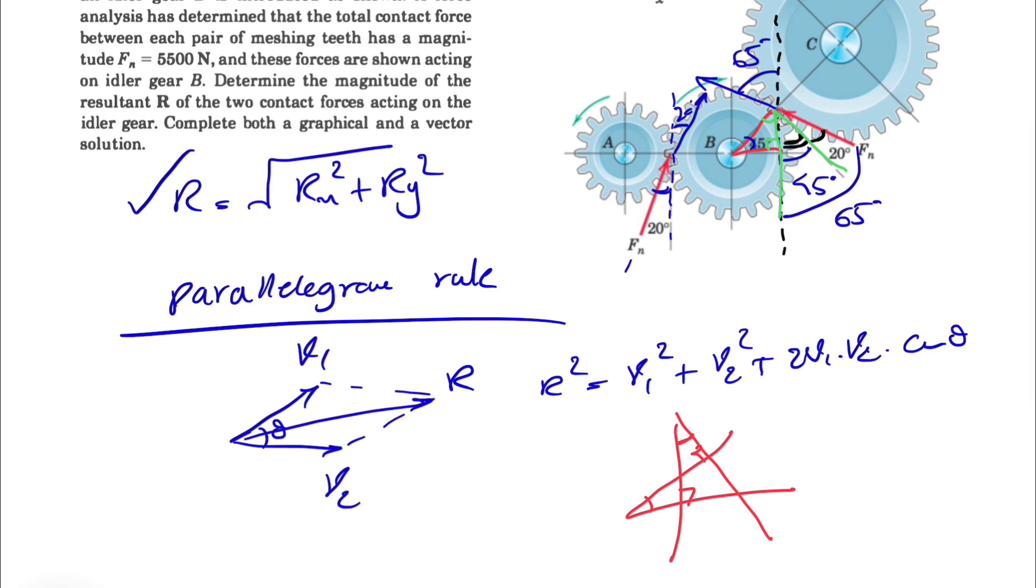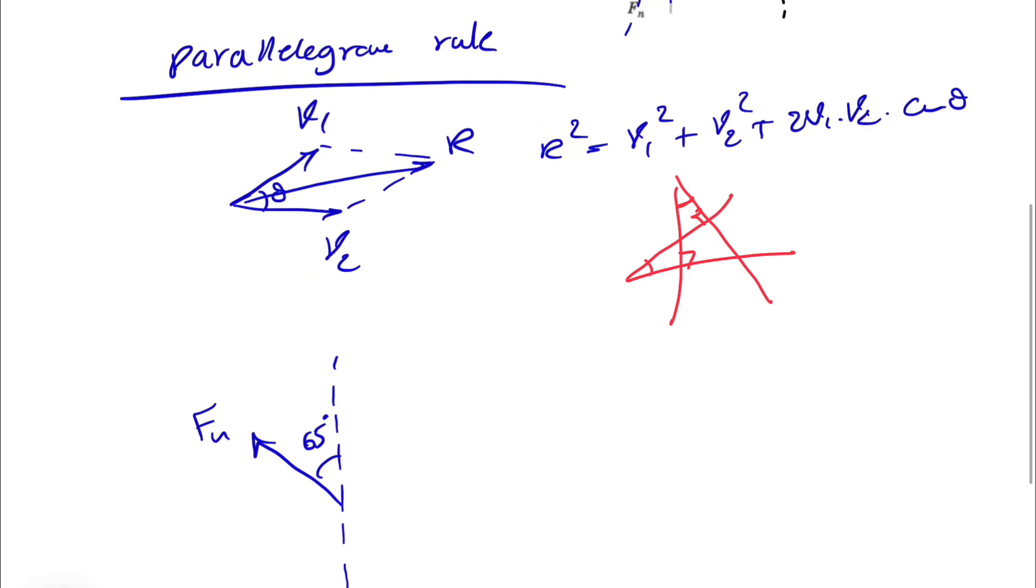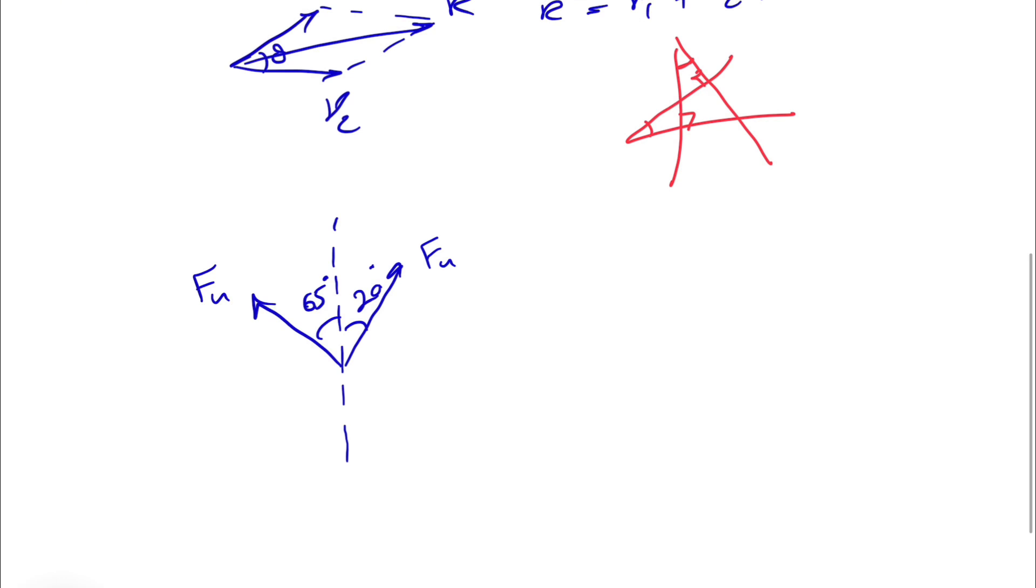So this is just the line of action of the other Fn. So that means in here the other Fn is making 20 degrees with the dotted line. And if you want to show our R, our R would be something like this.